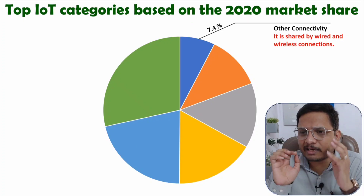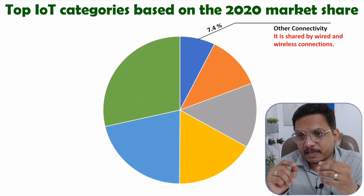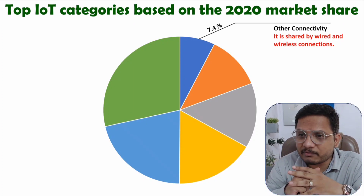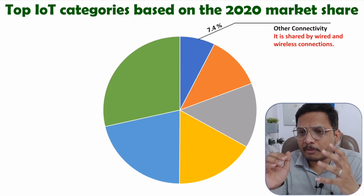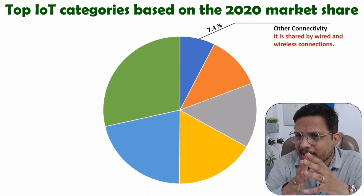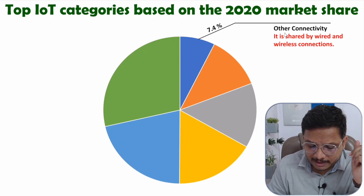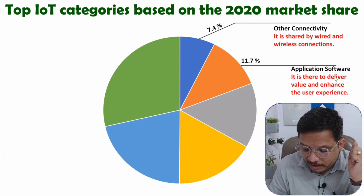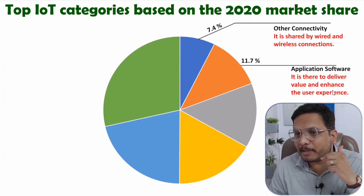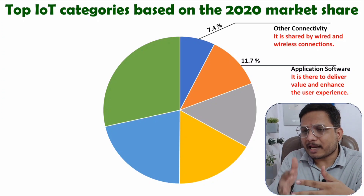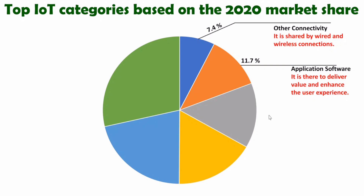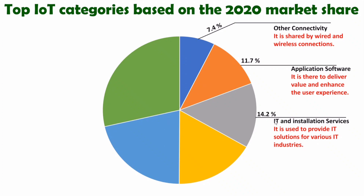There are varieties of protocols available. For short distances, protocols like Zigbee, Bluetooth, Wi-Fi, and NFC are used. For a range of around 5 kilometers, cellular technology protocols such as 2G, 3G, and 5G are used, and for hundreds of kilometers there are additional protocols. So connectivity protocols hold a share of around 7.4%. The second category is application software with a share of 11.7%, used to deliver value and enhance the user experience. The third category, with 14.2%, belongs to IT and installation services, used to provide IT solutions for various industries.